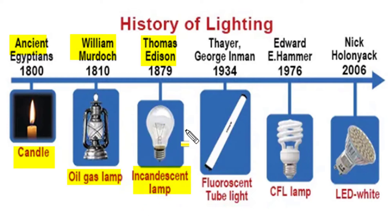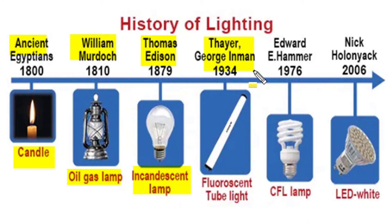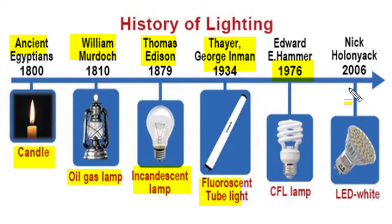The first electrical lamp was developed after a long exercise by Thomas Alva Edison in the year 1879 as an incandescent lamp. Initially carbon filament was used, later tungsten filaments were also used. For higher energy efficiency, arc discharge lamps were developed, and TZ Inmen developed fluorescent tube light in 1934. Its compact version, the CFL, was developed in 1976 by Edward Hammer, and recently LEDs were discovered in 2006.